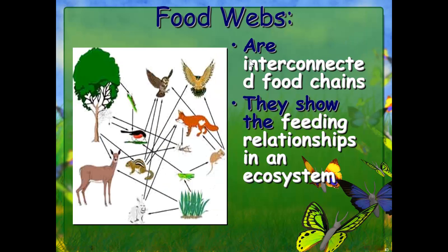Food webs are interconnected food chains. They show the feeding relationships of an ecosystem. All the different arrows show the different possible sources of energy for each animal. For example, an owl could eat a squirrel, a skunk, a rabbit, or a mouse — there are many different sources it could get its energy from. That's what a food web shows: many different possible energy sources for different animals.